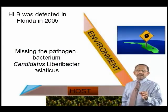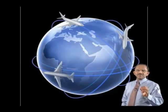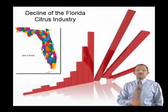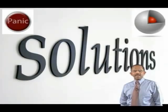Global transportation and an increased number of travelers, some carrying undocumented citrus, brought the HLB bacterium to the state of Florida. This started the decline of the mighty Florida citrus industry with a $9 billion economic impact. But there is no need to panic — we may have some solutions.